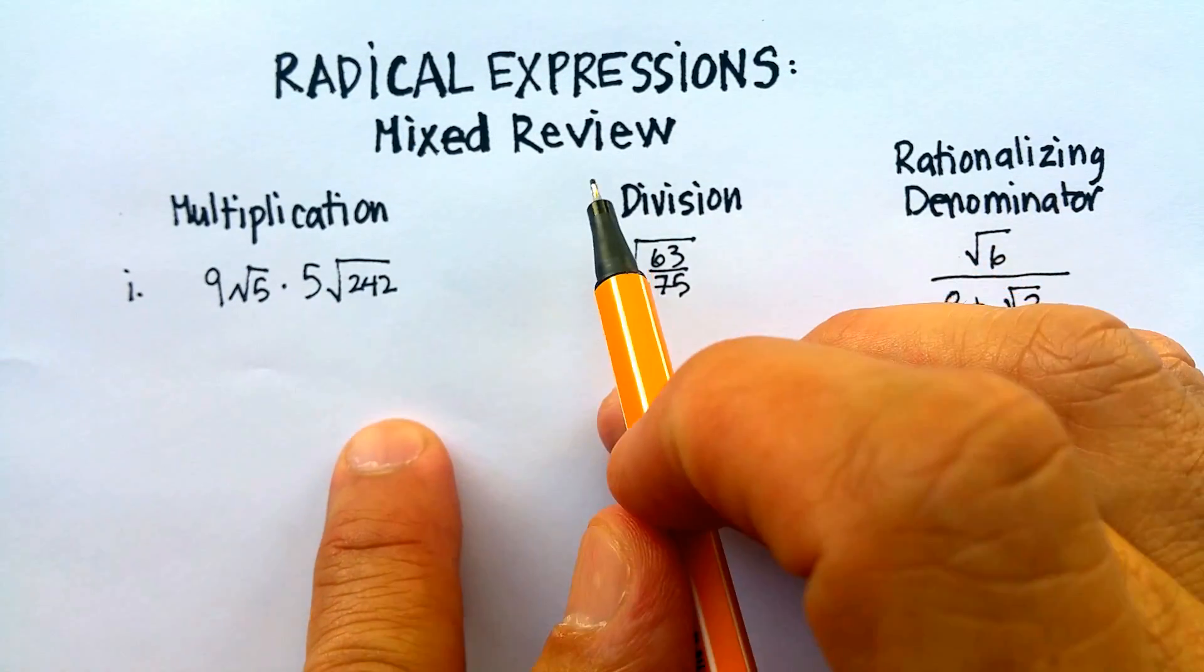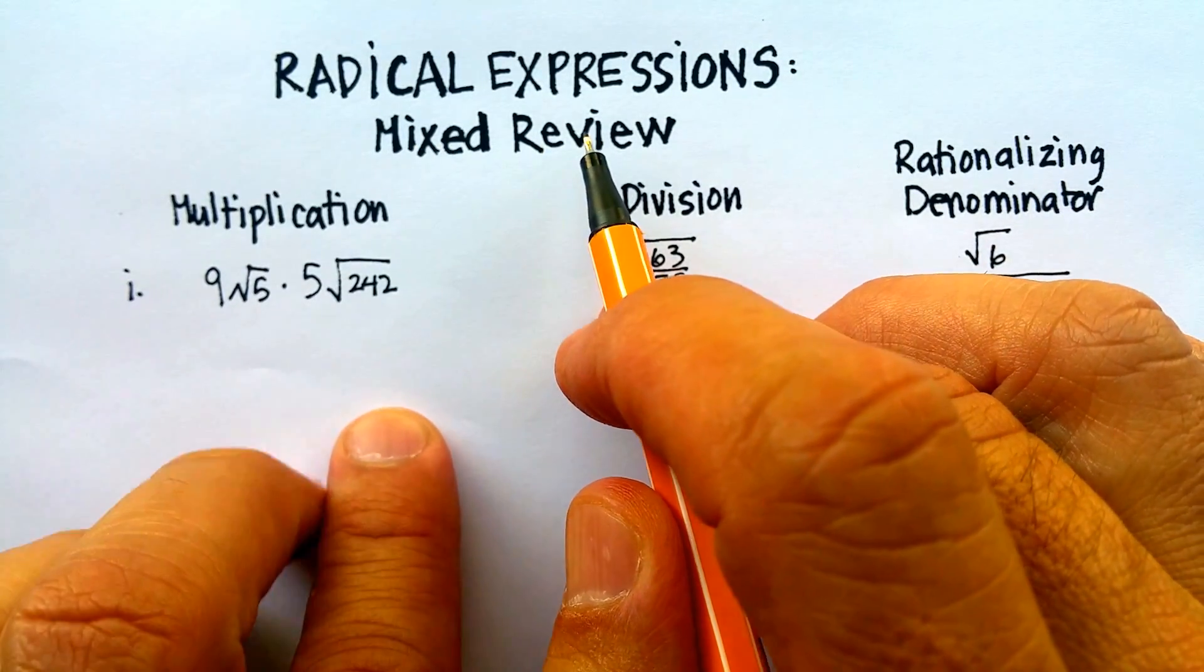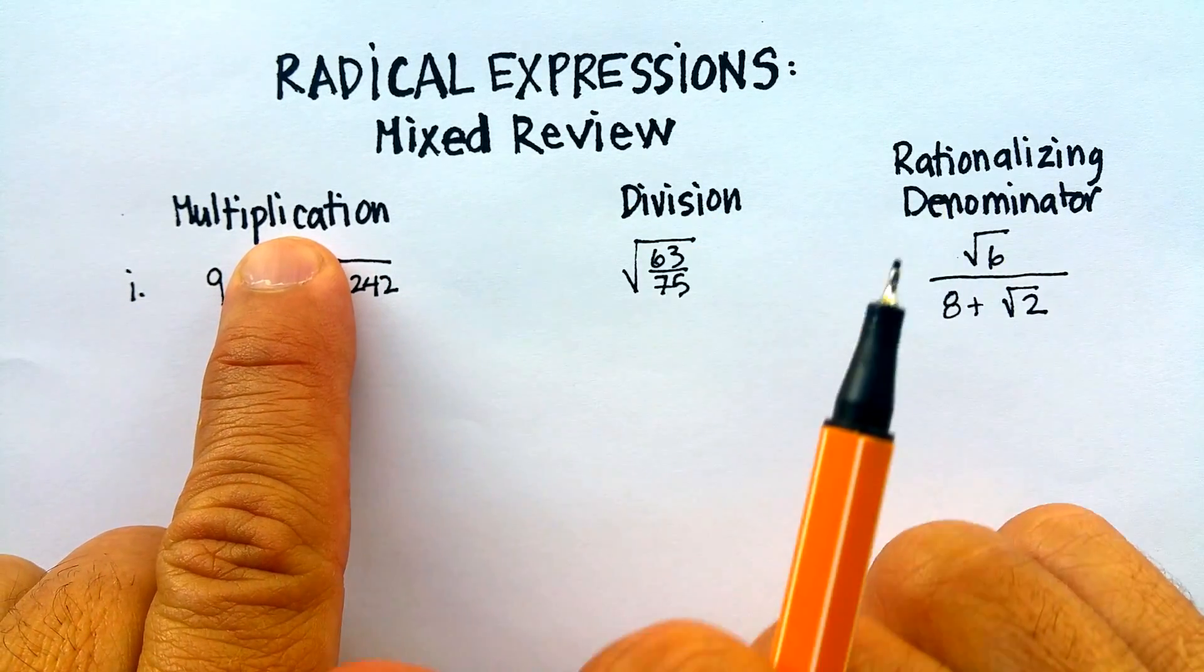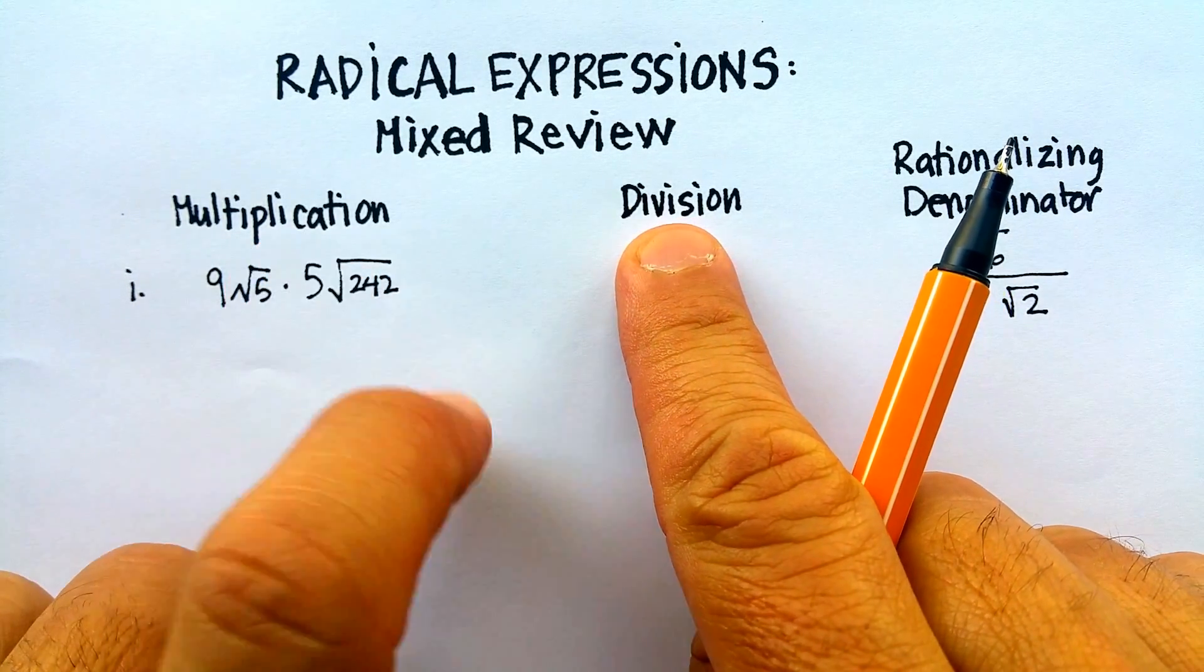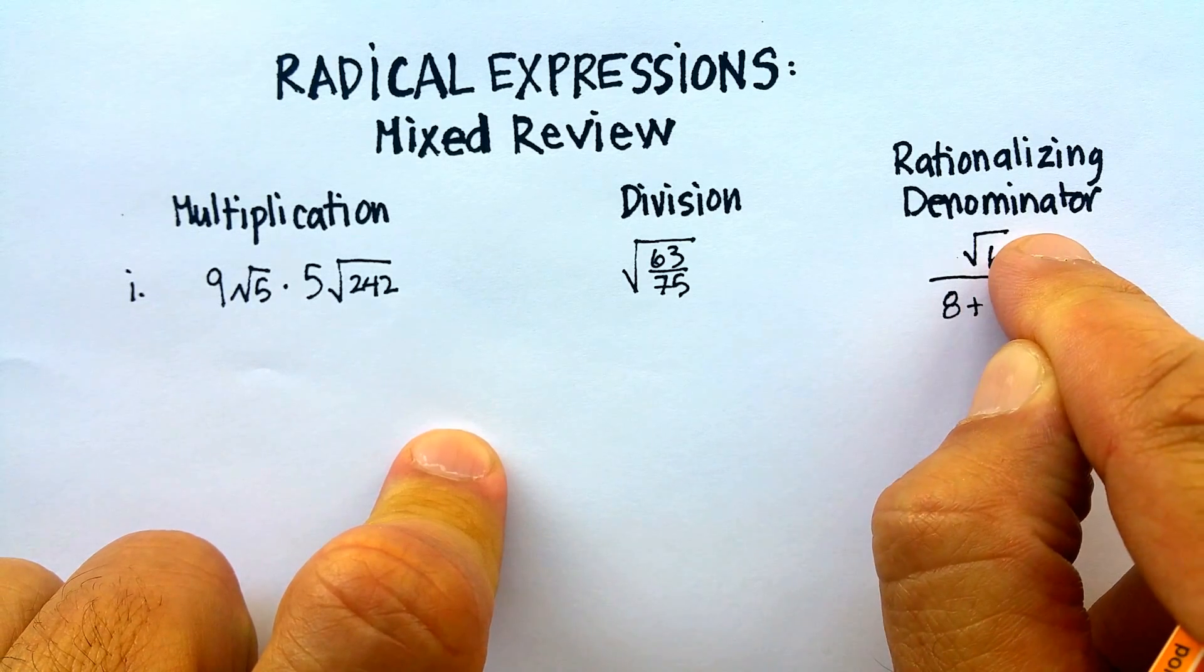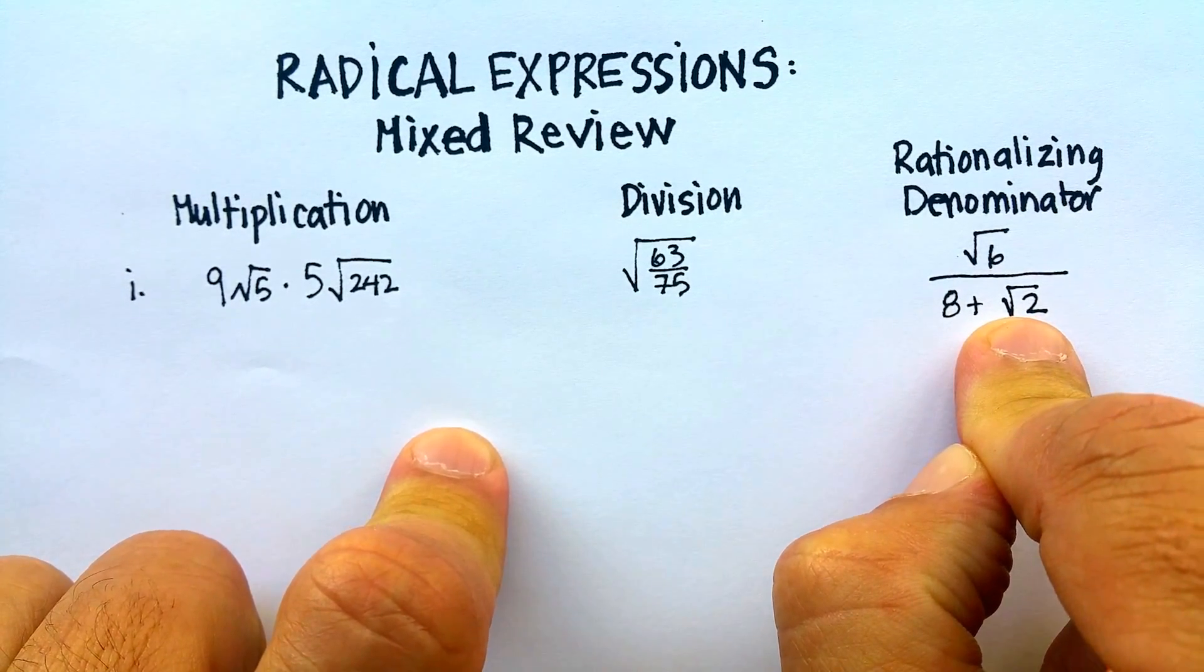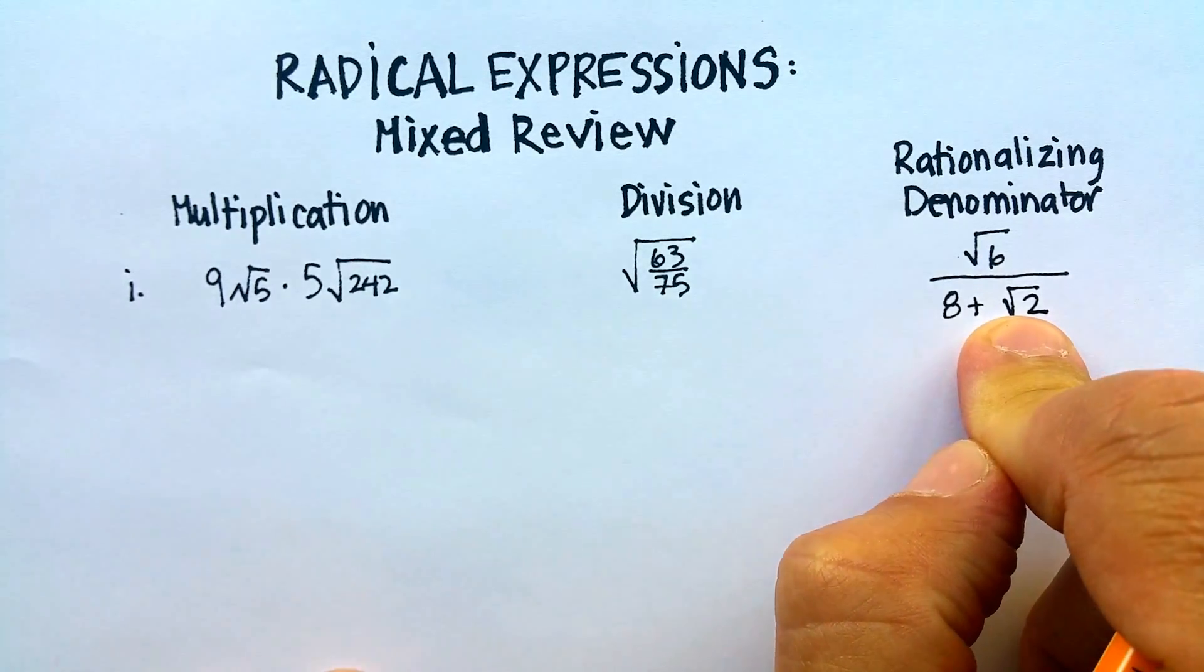In this video I'm going to do a mixed review of radical expressions, specifically an example of how to multiply radical expressions, how to divide radical expressions, and then how to rationalize the denominator of a radical expression when there's a binomial in the denominator. Let's get right to it.